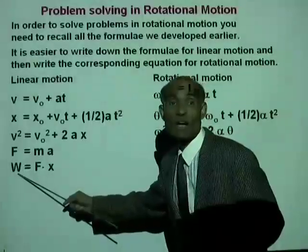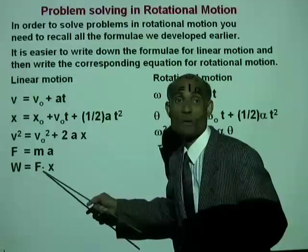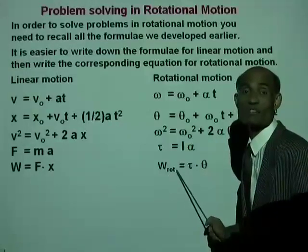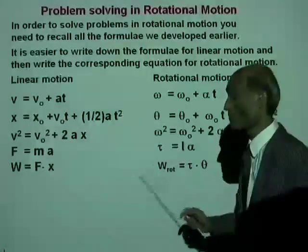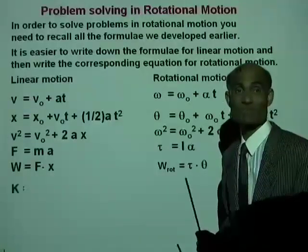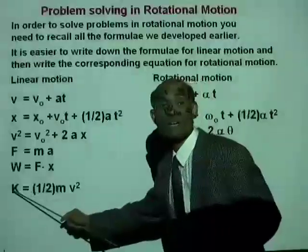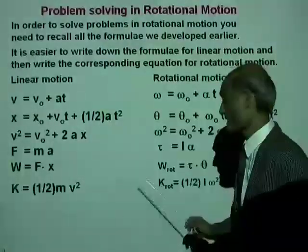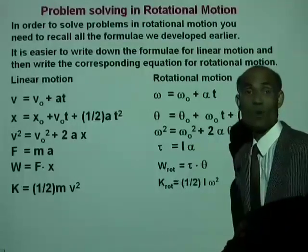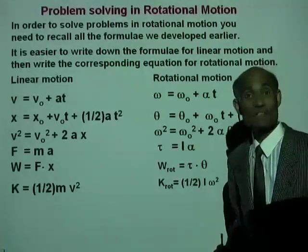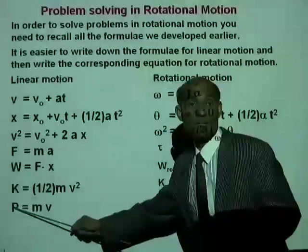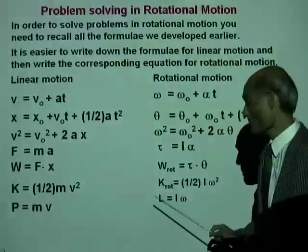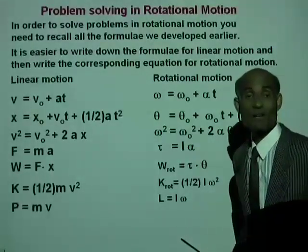Work done in linear motion is force multiplied by distance. Work done in rotational motion is the net torque multiplied by the angular displacement. Kinetic energy in linear motion is ½MV². Kinetic energy of rotation is ½Iω². Linear momentum P = MV, and angular momentum L = Iω.